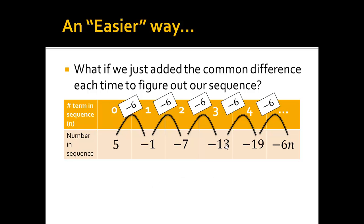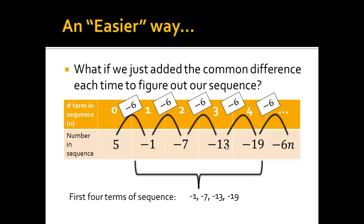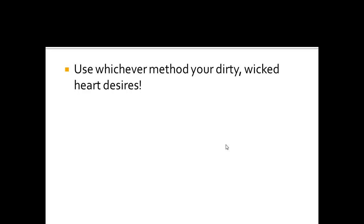Now, if I asked you for the first four terms in the sequence, to be clear, you would give me these — you would not include the 5 because it's technically the zeroth term. The actual first four terms of the sequence are negative 1, negative 7, negative 13, and negative 19. These are two different ways we can do this: the one where you're plugging in numbers, and the other where you set up a table and add or subtract the common difference. It doesn't matter which one you prefer — use whichever method your heart desires. I wish you luck on the rest of these problems.